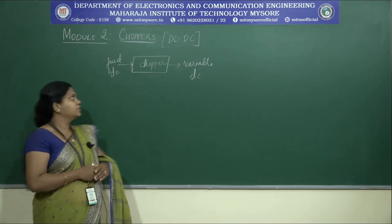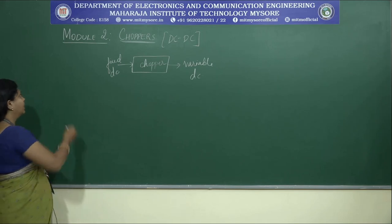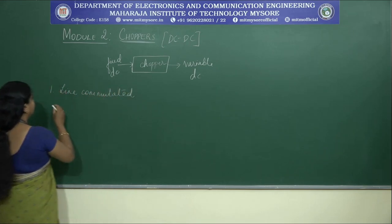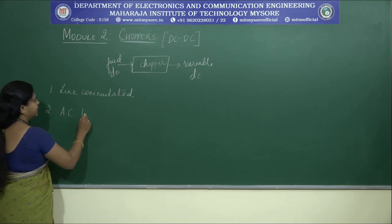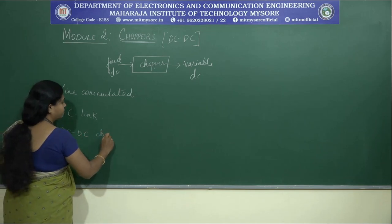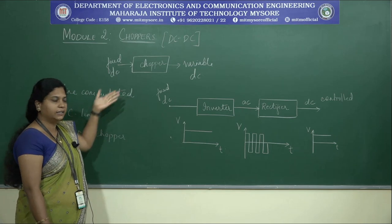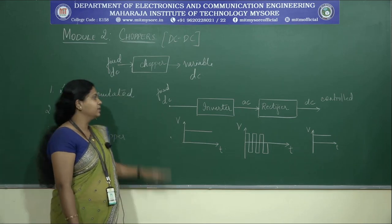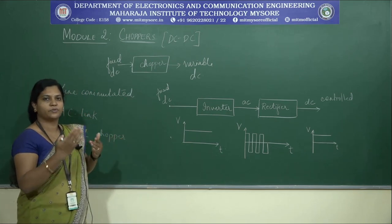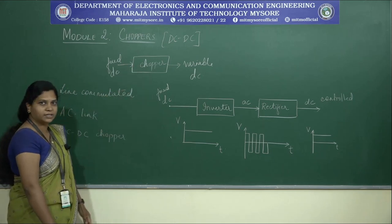Coming back to the syllabus: DC choppers — fixed DC to variable DC — can be obtained by three different methods. One is the line commutated converters, then AC link converters, then DC to DC chopper circuits. The first, line commutated converters, we have already studied as phase control rectifiers, where we change the voltage level and get DC from an AC signal.